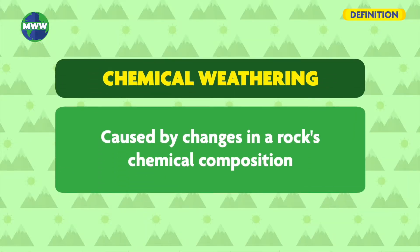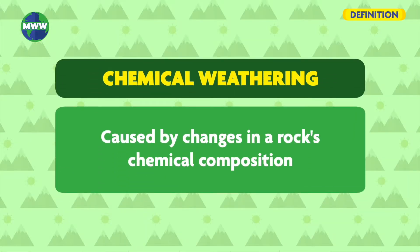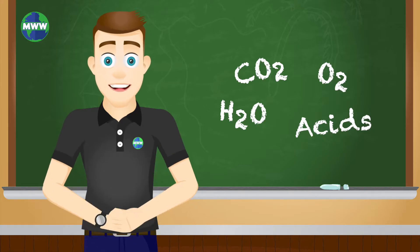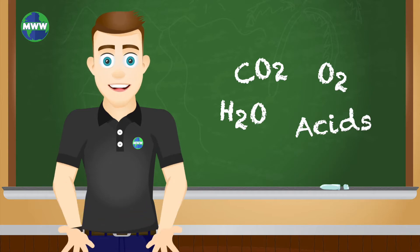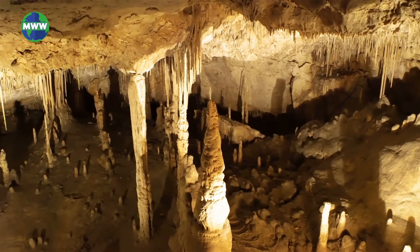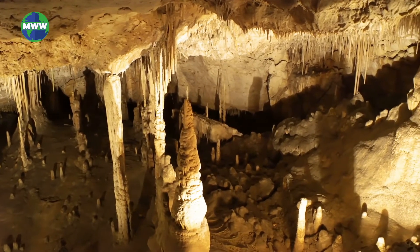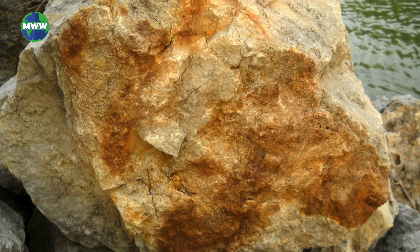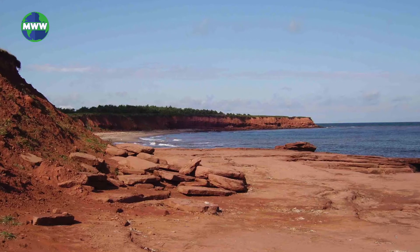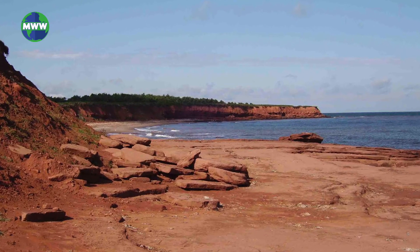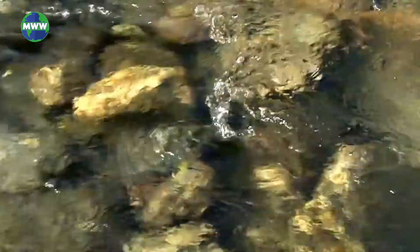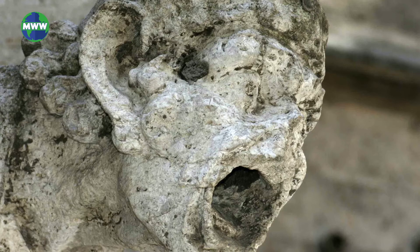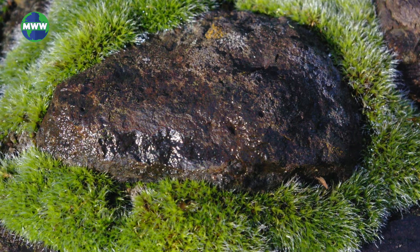Chemical weathering is caused by changes in the chemical composition of a rock. These reactions occur from carbon dioxide, oxygen, water, or acids. Carbonation is when water and CO2 combine to create a weak acid that eats away at a rock. Oxidation happens when rocks containing iron react with oxygen, making them rust and break down. Hydrolysis is the reaction between water and minerals that make up a rock, causing them to deteriorate. Acids in rain or from plants also cause rock decomposition.